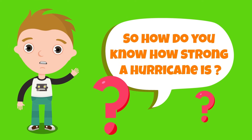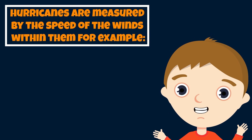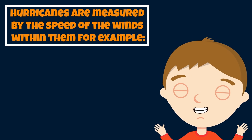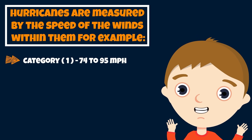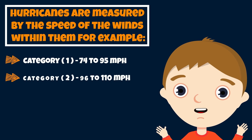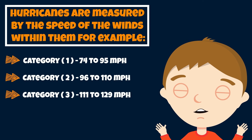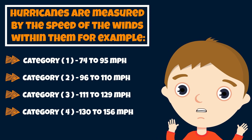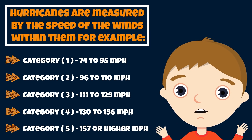How do you know how strong a hurricane is? Hurricanes are measured by the speed of winds within them. Category 1: 74 to 95 miles per hour. Category 2: 96 to 110 miles per hour. Category 3: 111 to 129 miles per hour. Category 4: 132 to 156 miles per hour. Category 5: 157 or higher miles per hour.